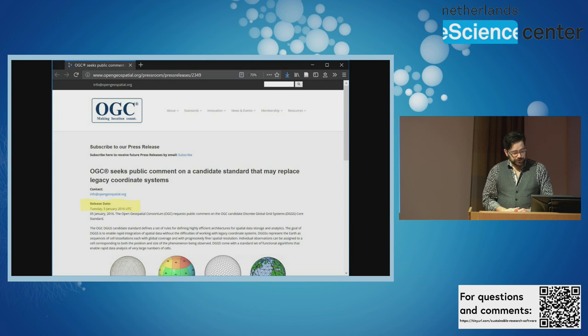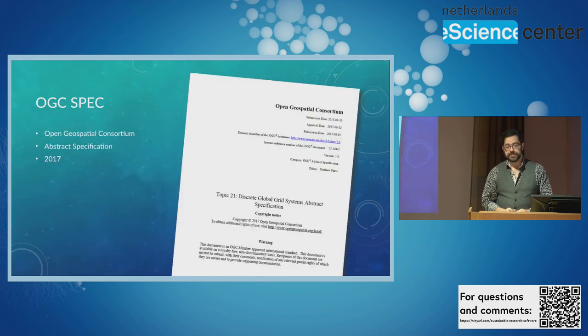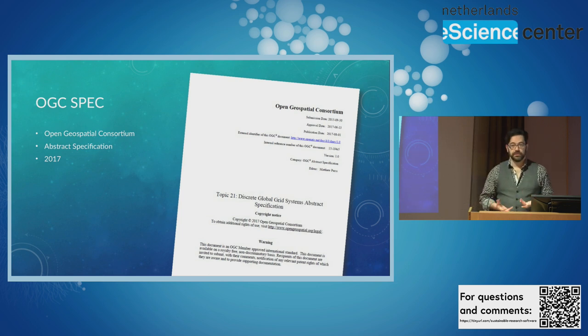Discrete global grid systems are actually now an OGC standard. They're quite new. This was out in 2016. OGC was asking people, hey, tell us what you think about this stuff. And by the next year they made it a standard. So it's one of the basic file format data models.